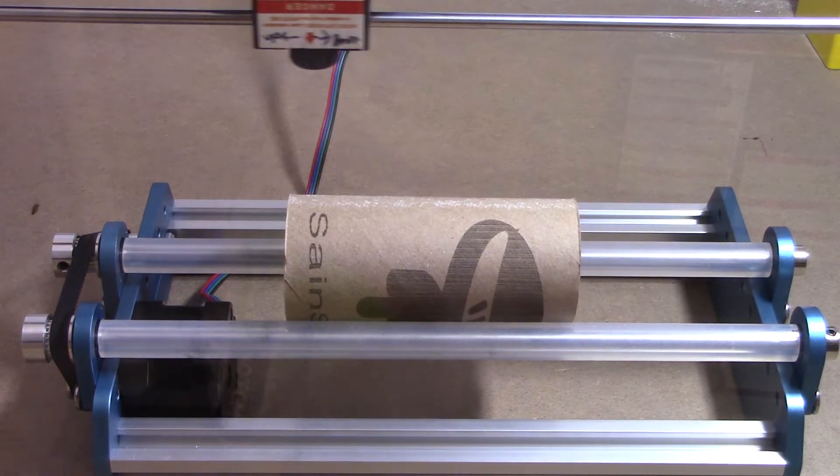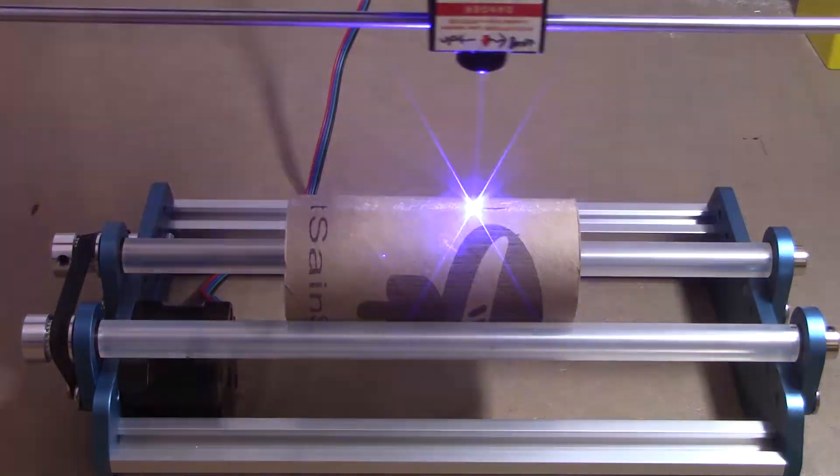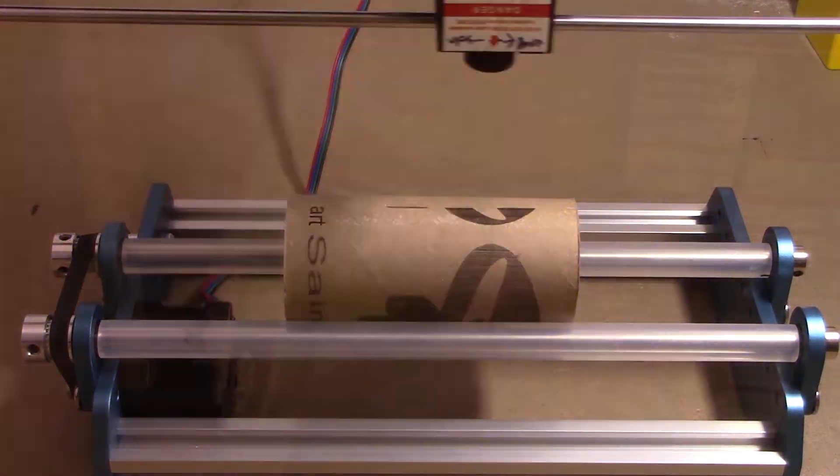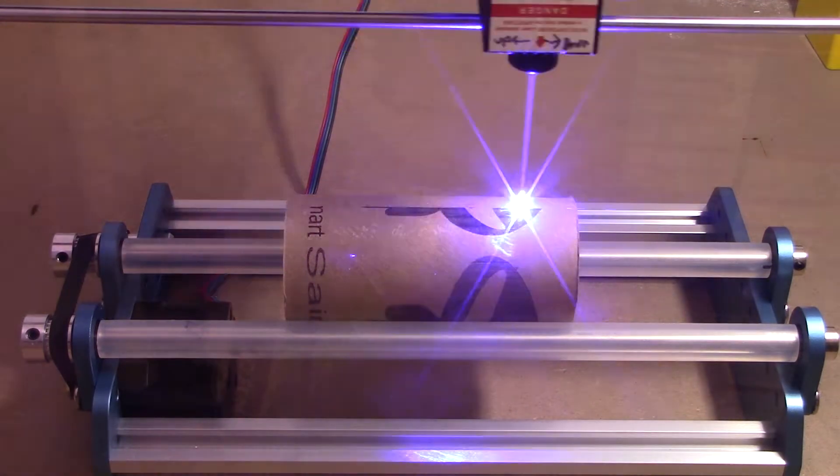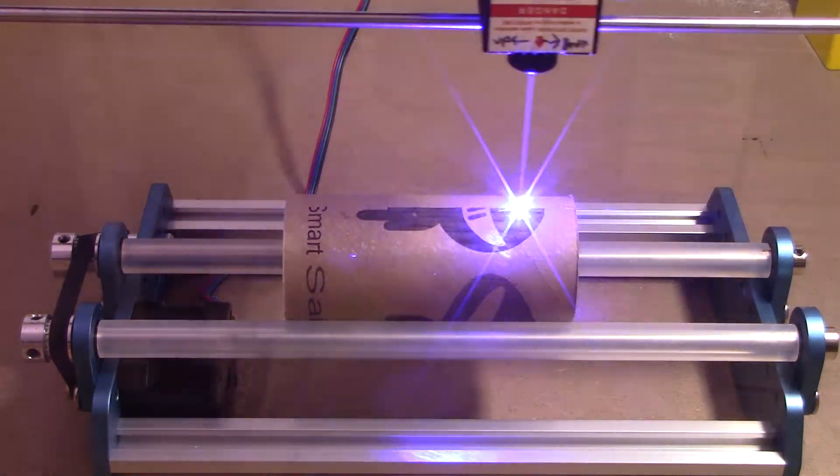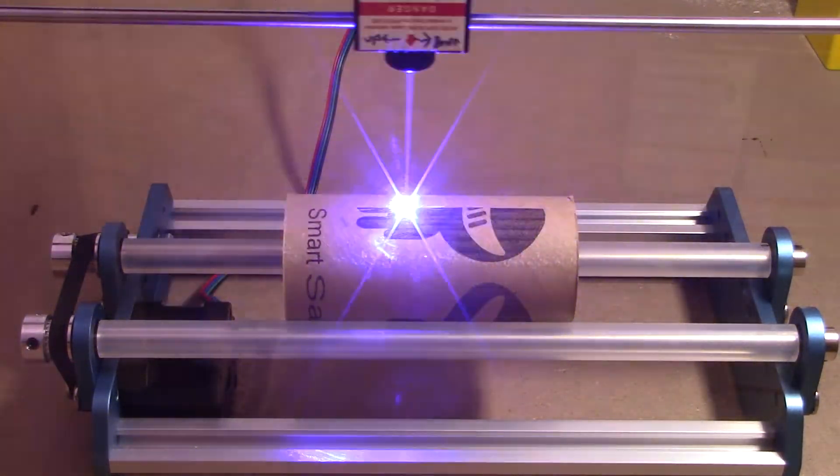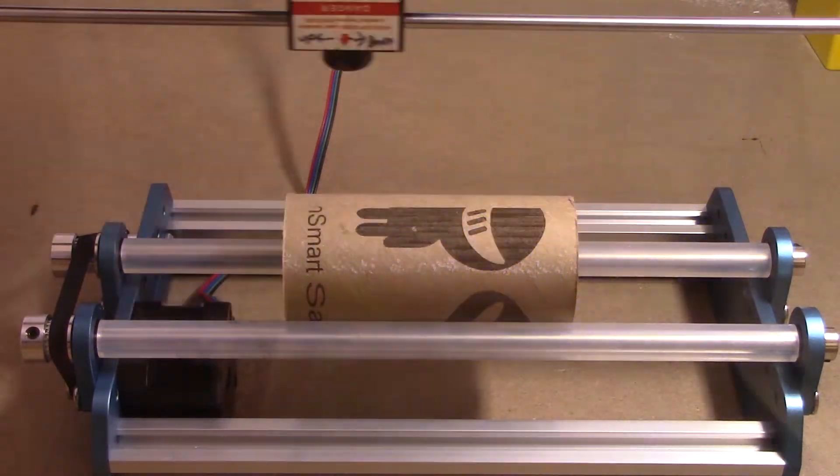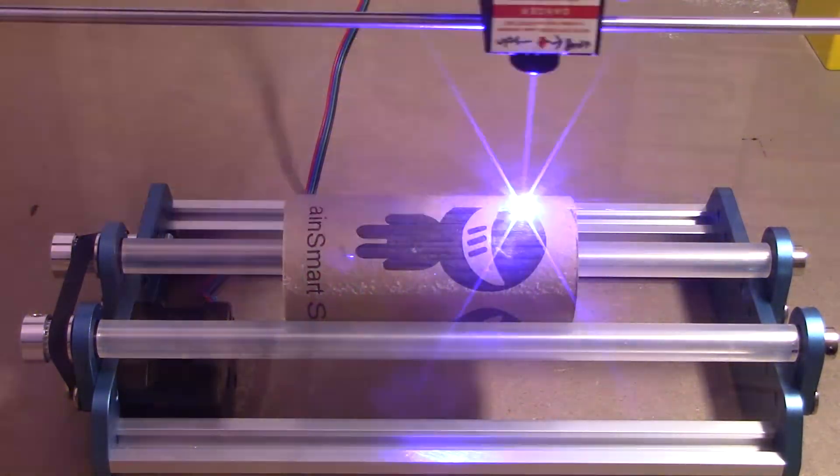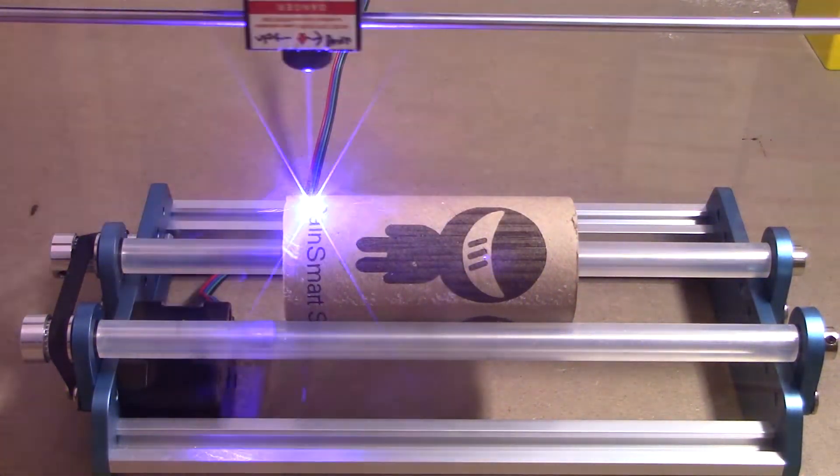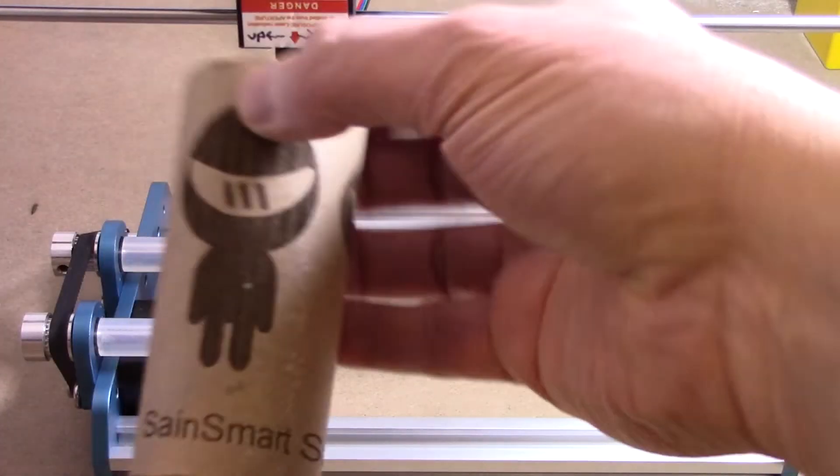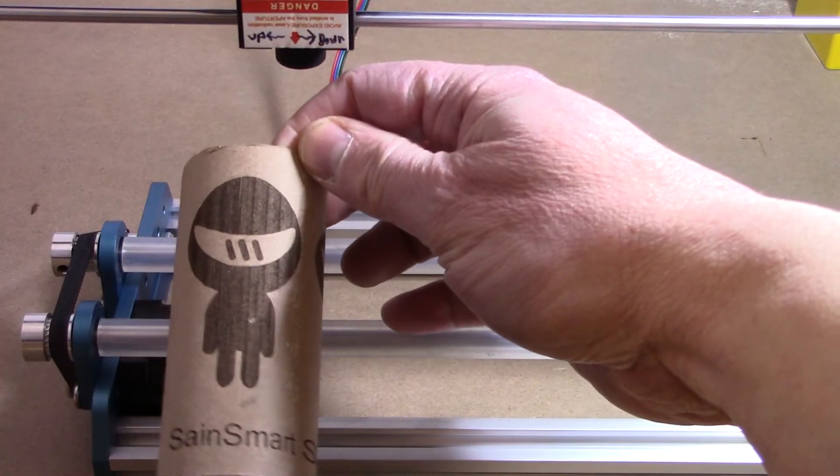For the next burn, I disabled the rotary in Lightburn and just used the basic settings. It turned out okay. It looks just like the little SainSmart logo.